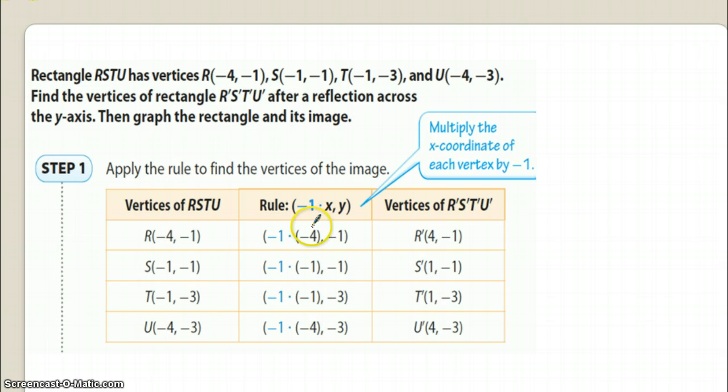So we have the rule of -1 times x, so you have -4 times -1, it's going to give you a positive 4. Do nothing to y, it remains -1.